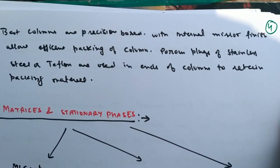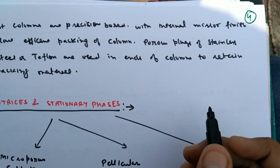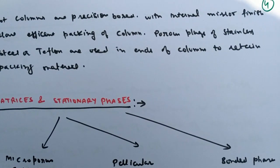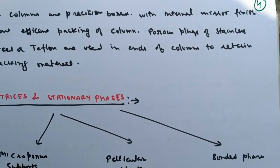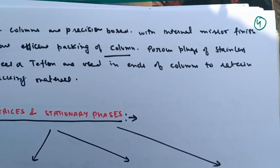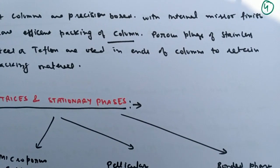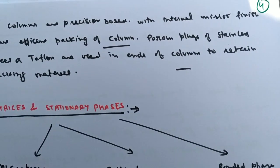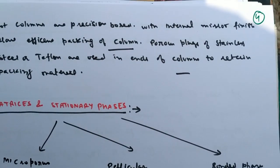The HPLC column is a precision bore column, so precision accuracy is done for bore formation with an internal mirror finish, allowing efficient and homogeneous packing on the inner side of the column. Porous plugs of stainless steel or Teflon are used at the ends of the column to retain the packing material, withstanding the pressure of the column.